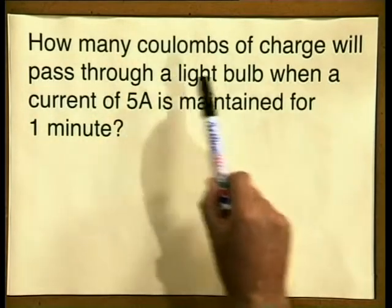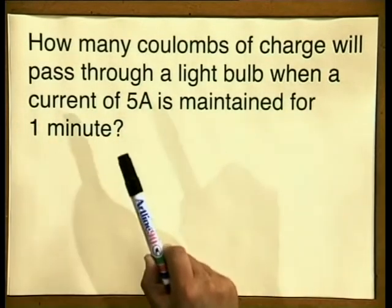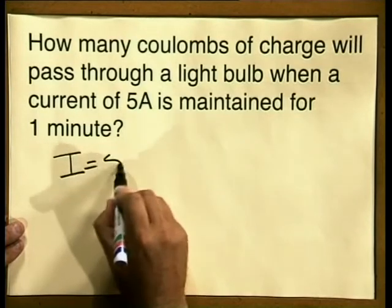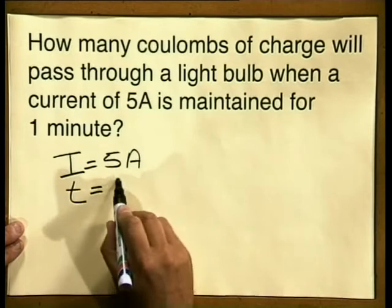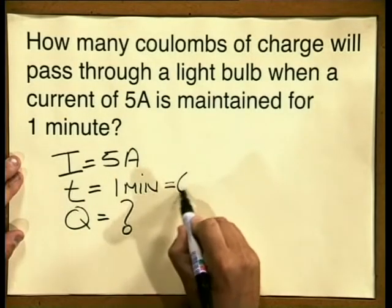The question reads: how many coulombs of charge will pass through a lightbulb when a current of 5 amperes is maintained for one minute? First of all, I must organize the information. The current is equal to 5 amperes, the time is equal to 1 minute, and q, the charge, is what we are looking for. The time given is in minutes, but the SI unit for time is the second, so we must convert our time into SI units — that is, convert 1 minute into seconds. So 1 minute equals 60 seconds.